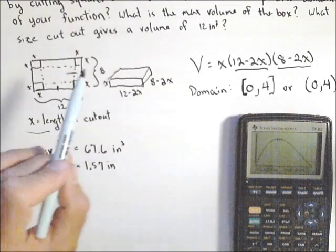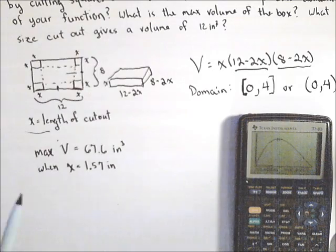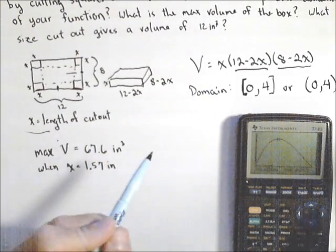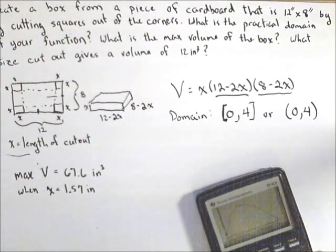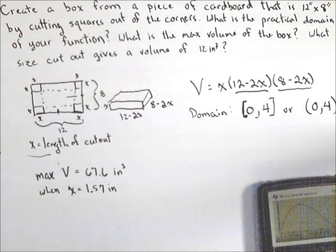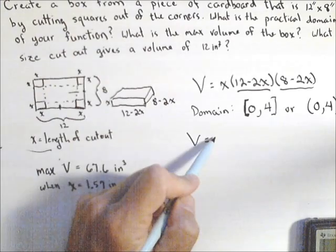Now we can go to our last question. What size cutout gives a volume of 12 inches? So what we're looking for is where our function is equal to 12. So we want to find an input given an output. So we want to find when v equals 12.